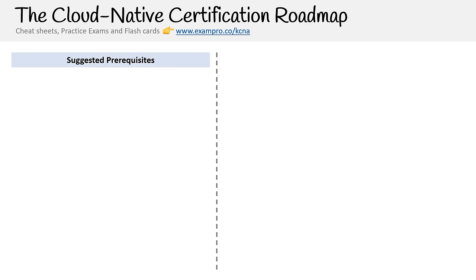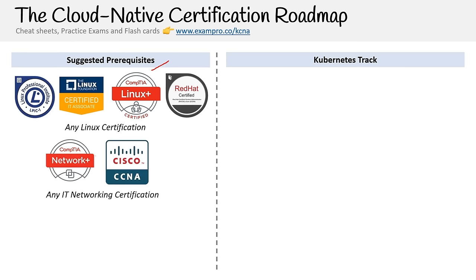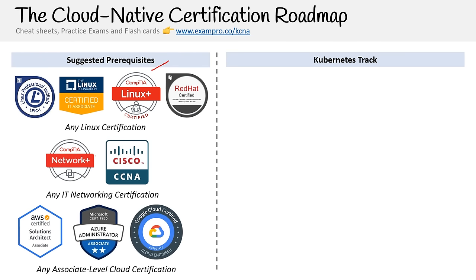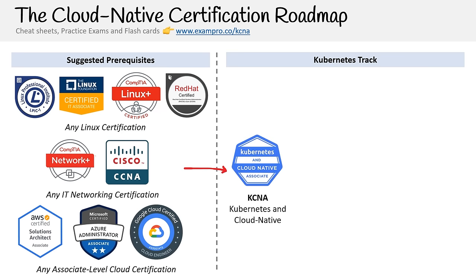We have suggested prerequisites and the Kubernetes track. At the fundamental level, I rarely ever recommend suggested prerequisites, so this should tell you something about the difficulty of this exam. You're going to need some Linux knowledge, Linux networking, IT networking, cloud networking, or an associate-level cloud certification. I'm suggesting one of those categories — not all of them. From there, you can proceed to the KCNA, though you can do it without these prerequisites; you just might be more confused than expected.